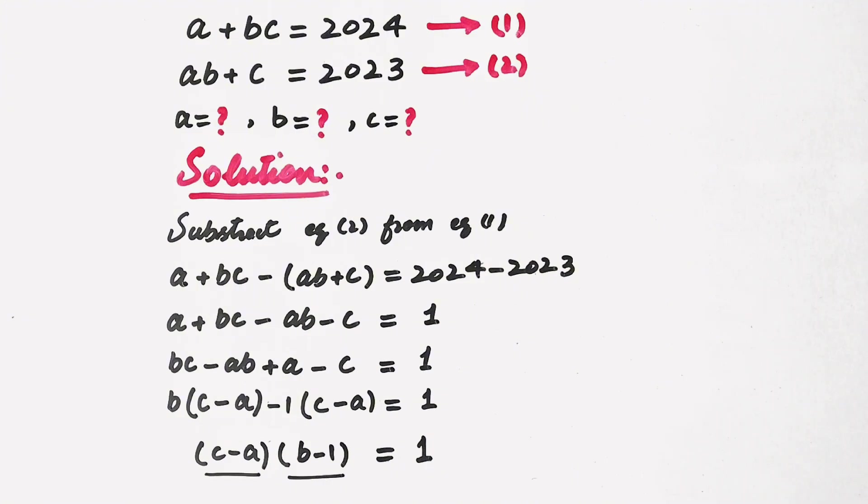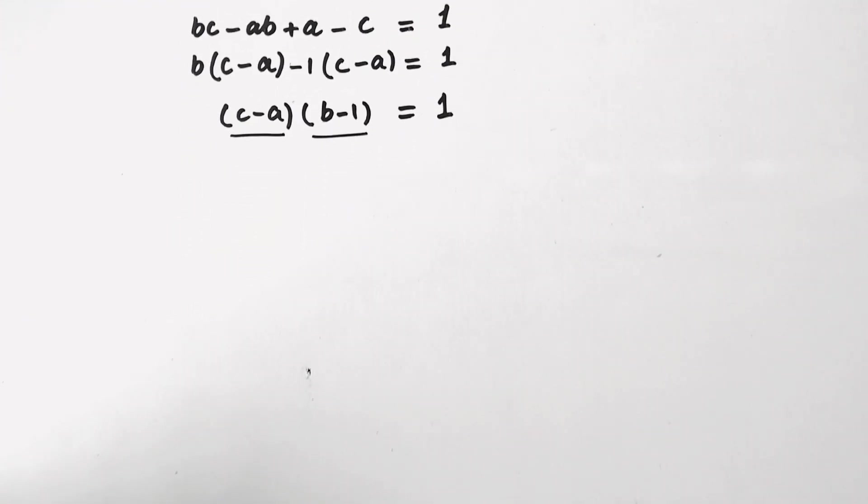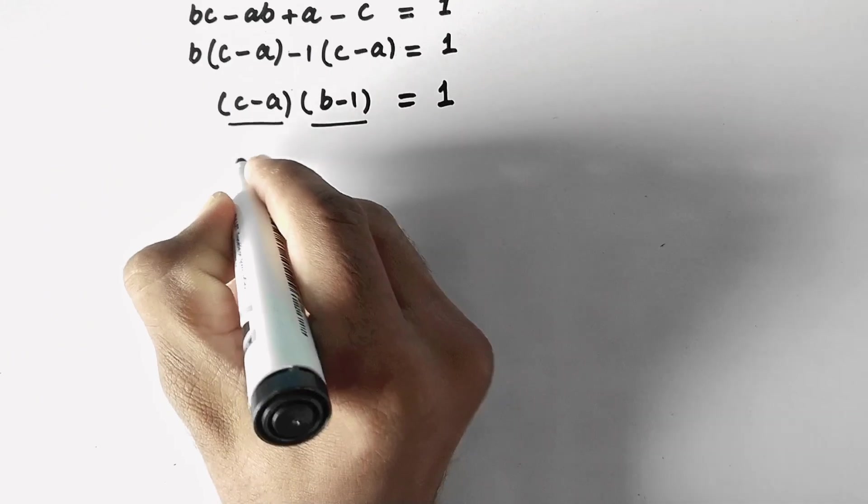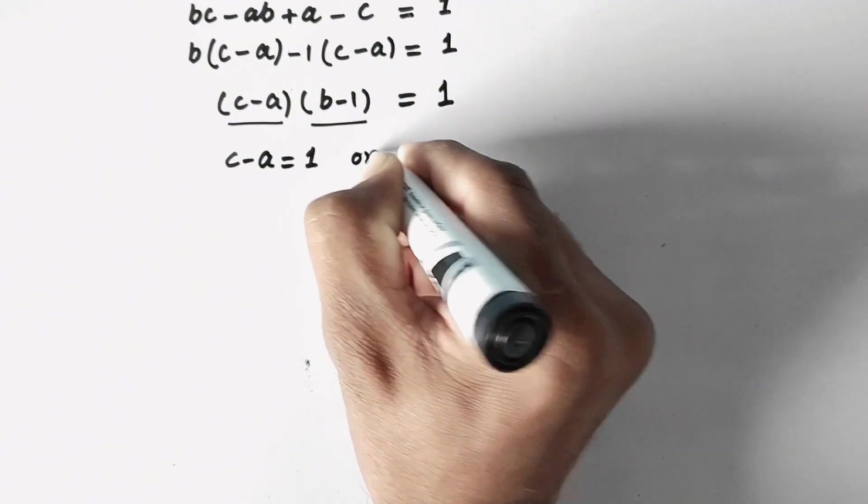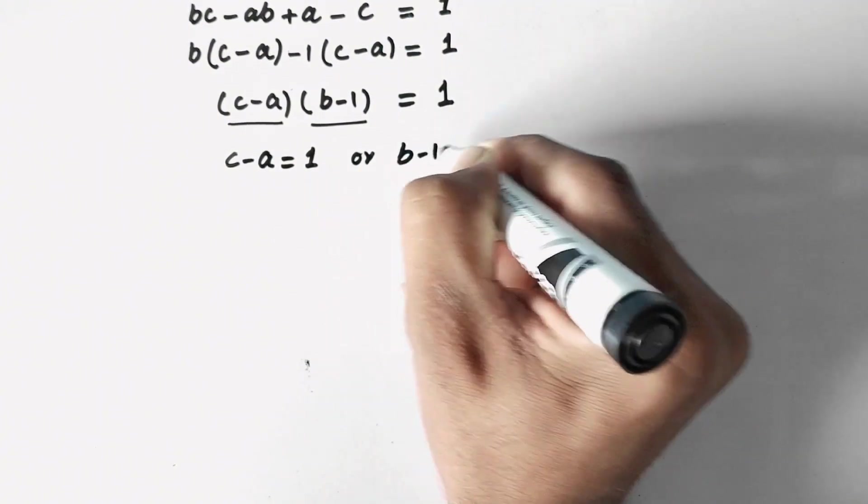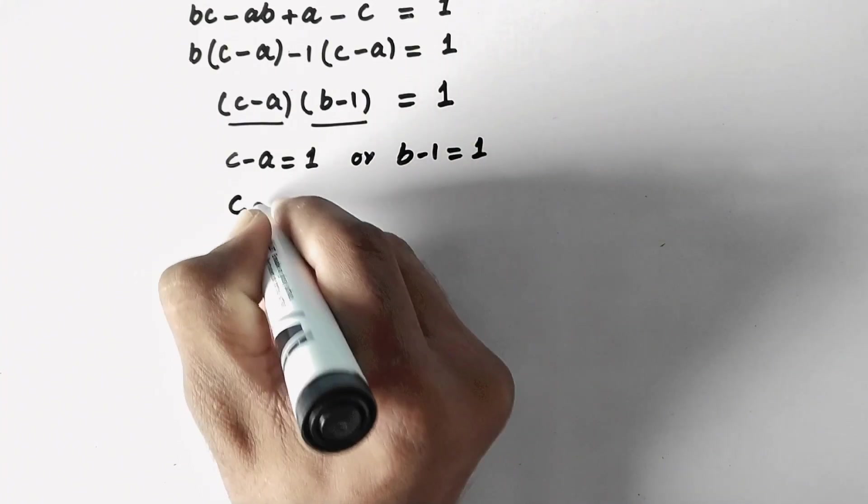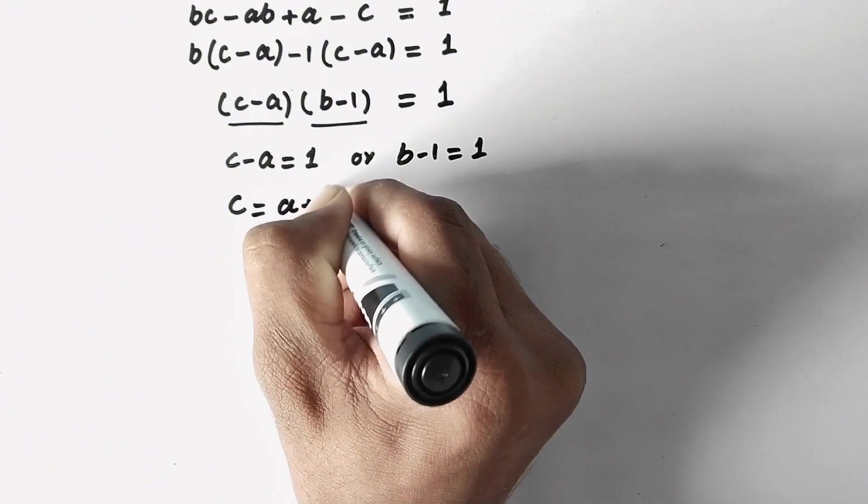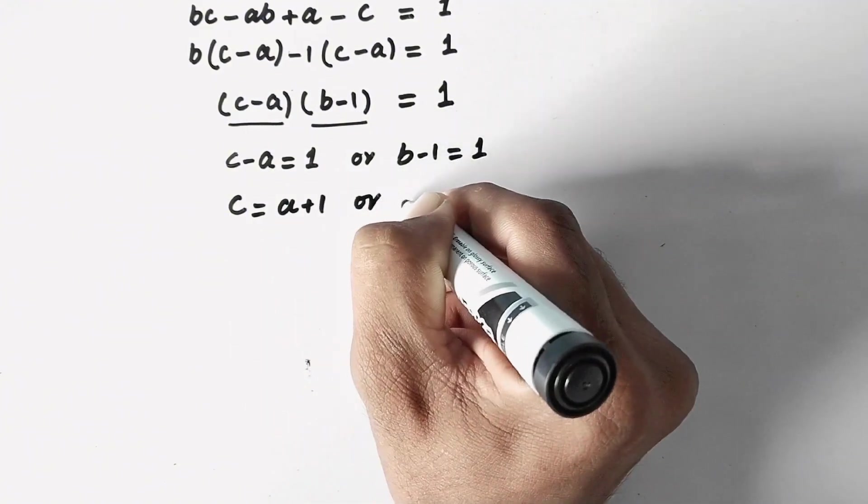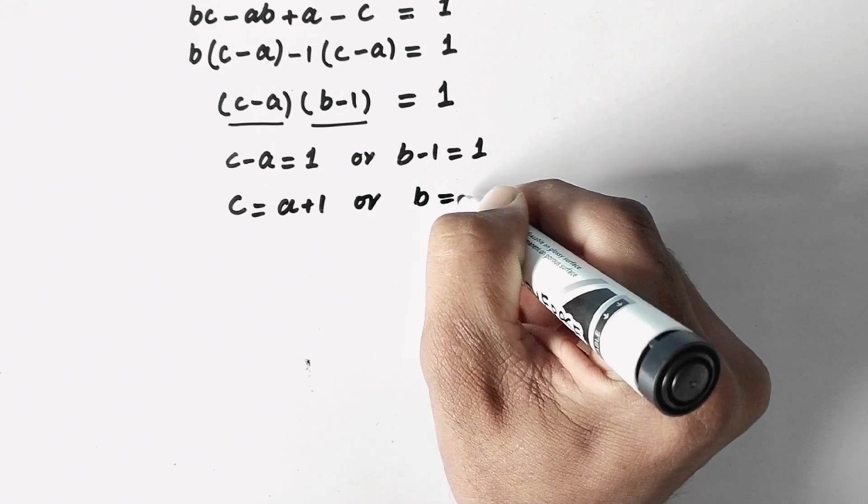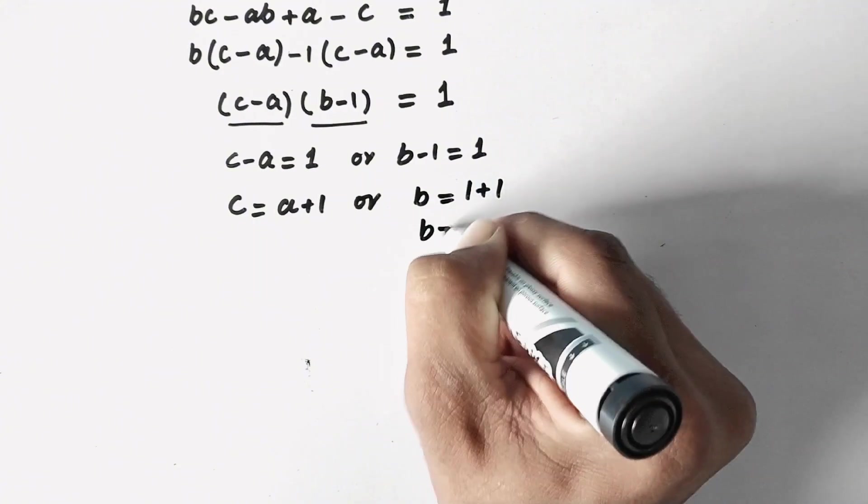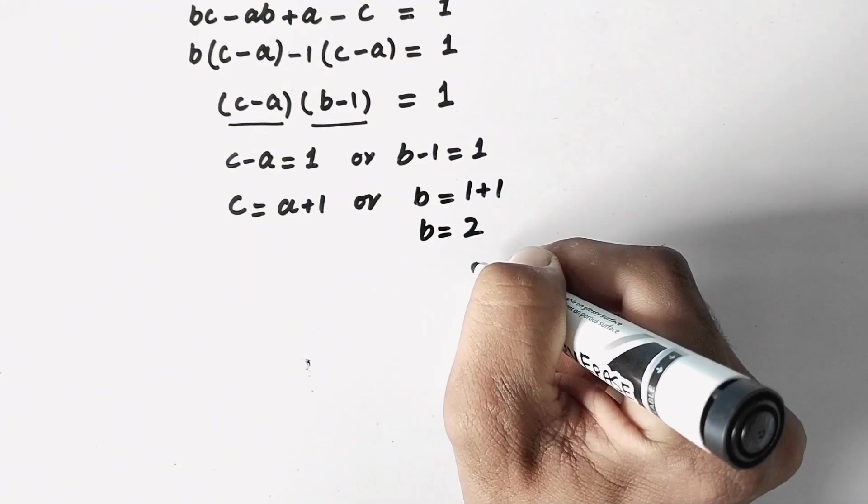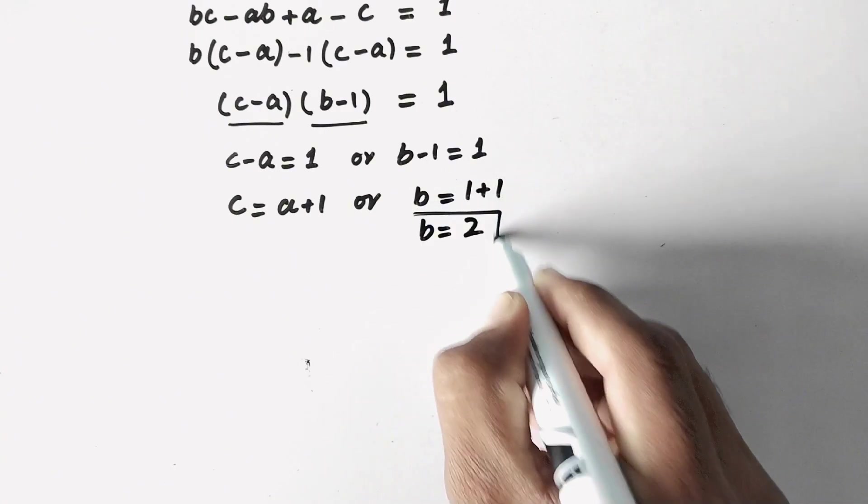So now here we will write C minus A equals 1 or B minus 1 equals 1. Here C will be equal to A plus 1, or here B will be equal to 1 plus 1, or B will be equal to 2. So that is the value of B.